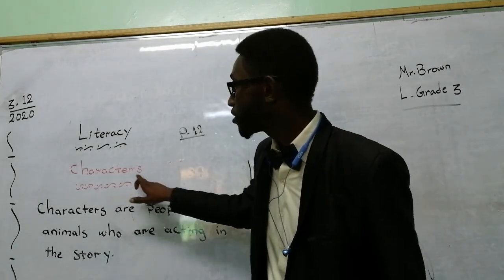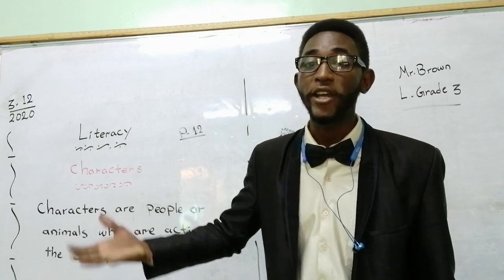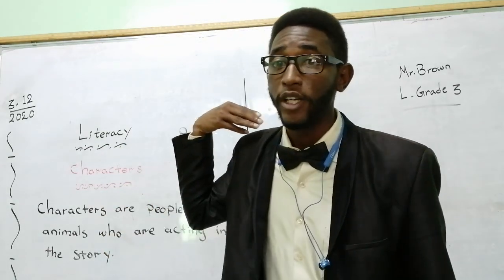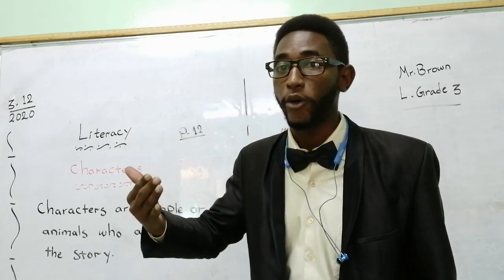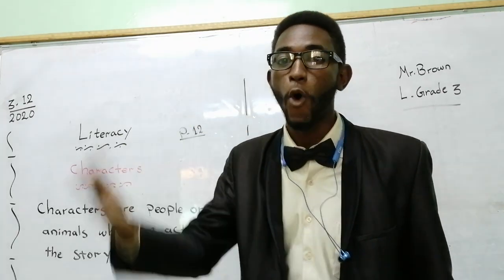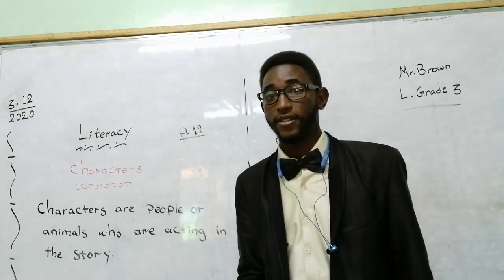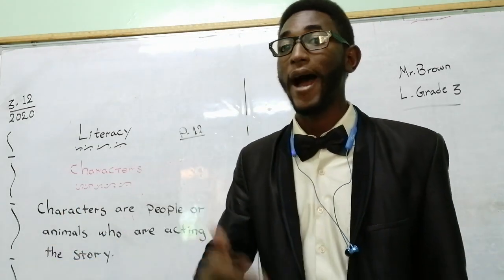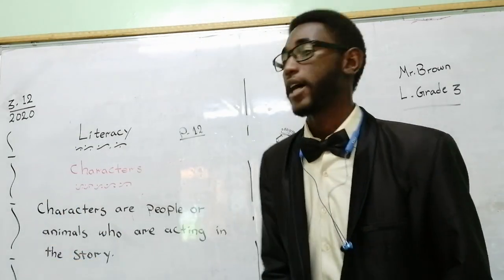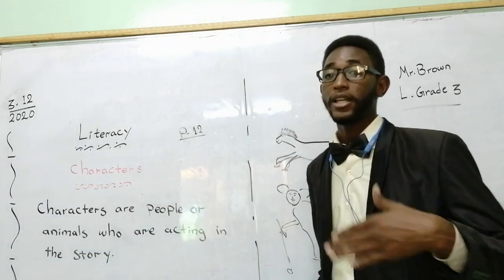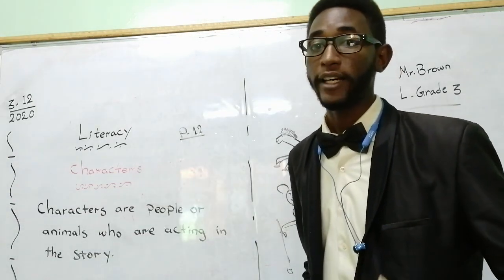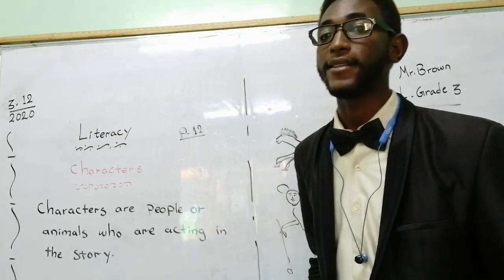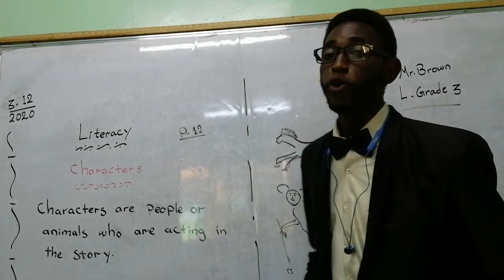Today we would like to talk about characters, but before that let's recall what we had last time. Last lesson we talked about settings generally. We described using adjectives of our own, and as we said, an adjective is a word that is used to describe a noun, and a noun can be a place.